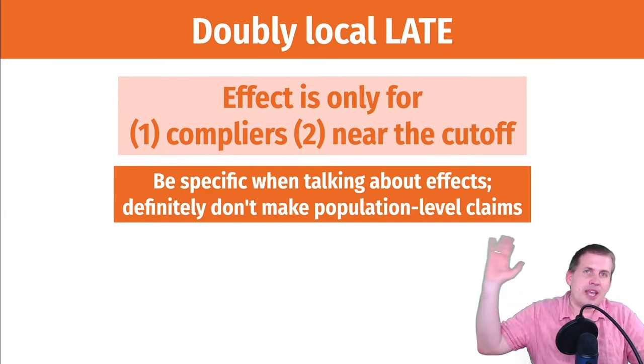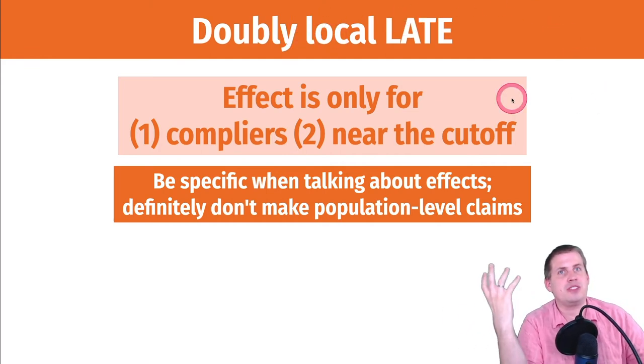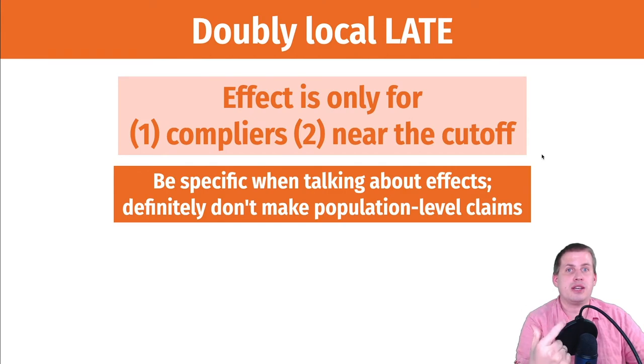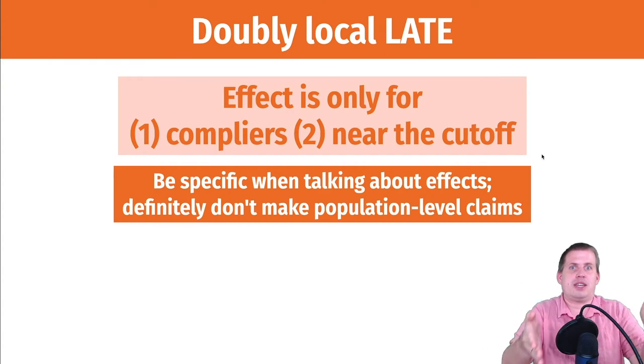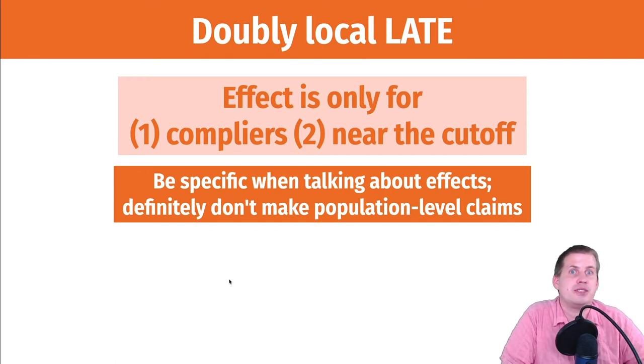One caveat to all of this is the effect that you find when you use fuzzy regression discontinuity is actually doubly local, which means you have to add even more caveats when you're describing it. Regression discontinuity is already local because you're describing the causal effect for people just in the bandwidth. So now what you're doing is you're talking about the effect for people in the bandwidth who are also compliers. So just be specific about the effects that is for compliers in the bandwidth.